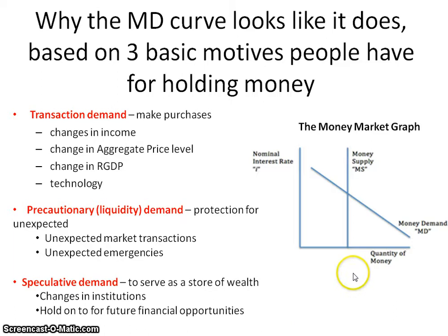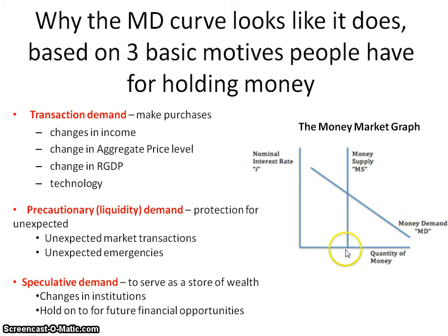The third reason is speculative demand. This is about serving as a store of wealth, because you might want to have future financial opportunities with different institutions or different ways of spending. As a result, you need that money to be on demand. These are the three reasons why the money demand curve looks like it does.